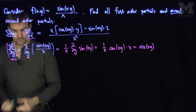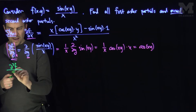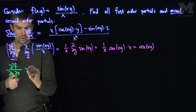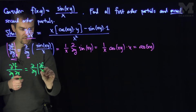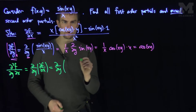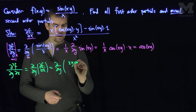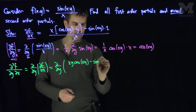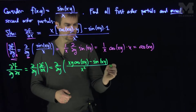The next thing we're going to do is compute ∂²f/∂y∂x — that is, the y derivative of the x derivative. So I'm going to take the y derivative of this expression: [xy·cos(xy) − sin(xy)] / x².